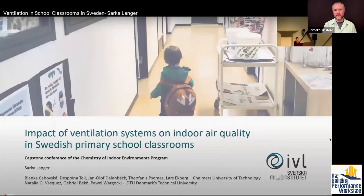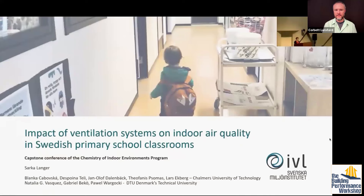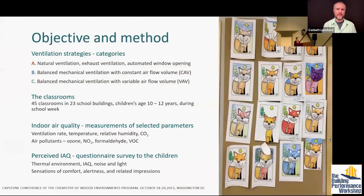Today I'd like to tell you about our project and its results studying the impact of ventilation systems on indoor air quality in Swedish primary school classrooms. The primary objective was to study ventilation strategies, so we looked at three categories: natural ventilation, exhaust ventilation, and automated window opening — also known as Window Master — and then balanced ventilation, mechanical ventilation with heat recovery with constant airflow volume.